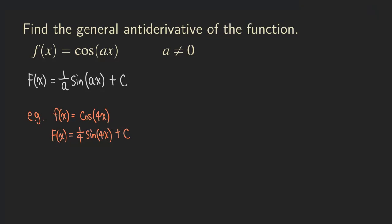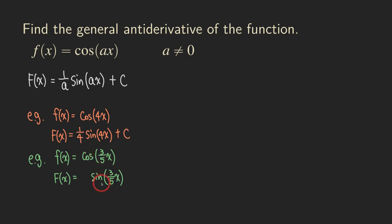Let's try another one. Say our function is cosine of (3 over 5)x. The antiderivative, capital F, is sine of (3 over 5)x. The process is to think about what function, when differentiated, gives cosine — that's sine. Then multiply in front by the reciprocal of the coefficient of x, which is 5 over 3, and add the constant C.